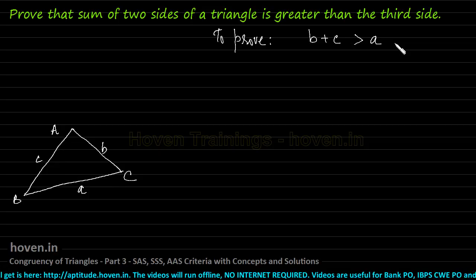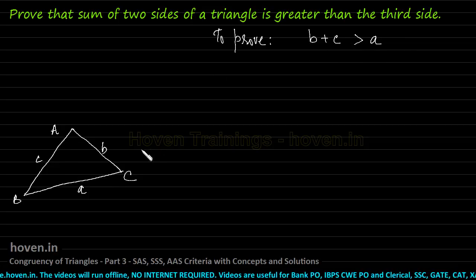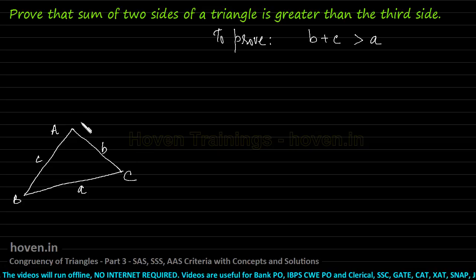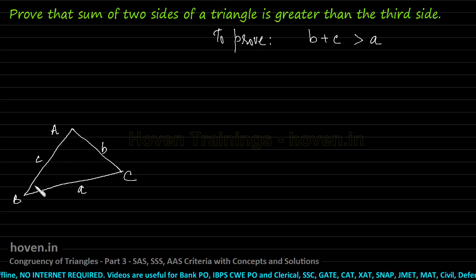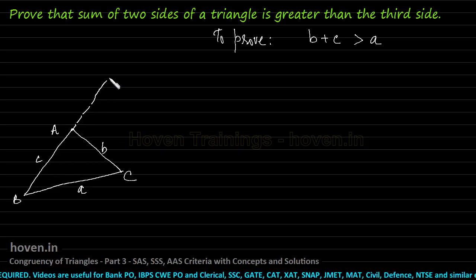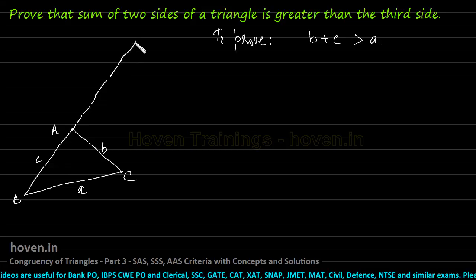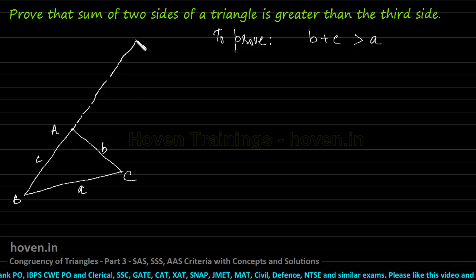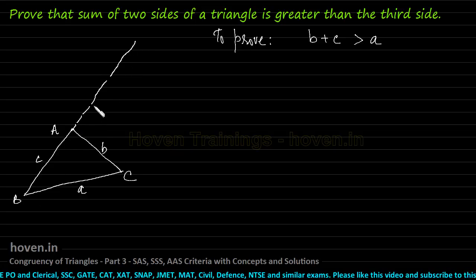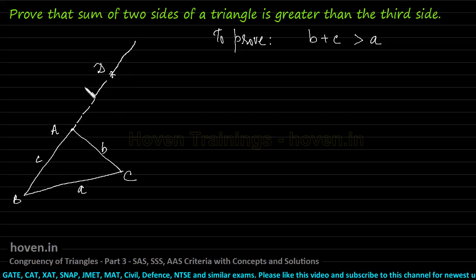is really looking very difficult. But if we do some smart thinking and do this construction, things will look very simple. Let us produce AB to any length — it is a straight line and can be produced. But produce AB to such a point so that AD becomes exactly equal to B.